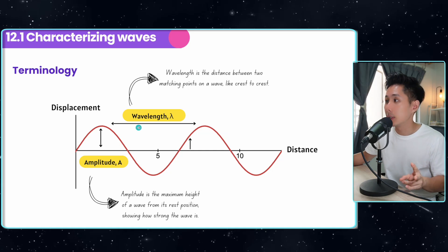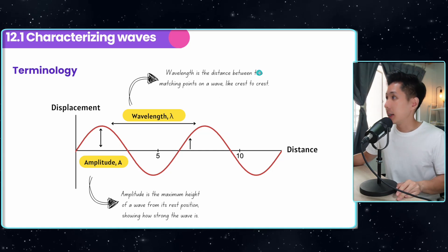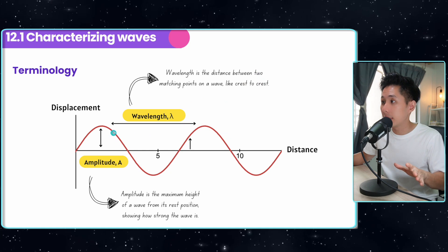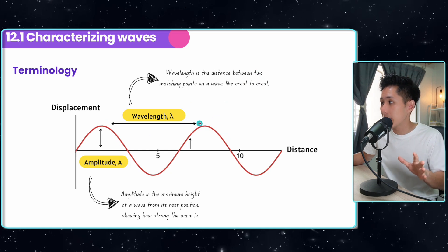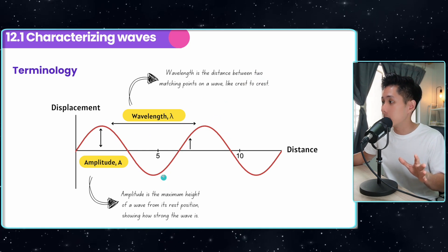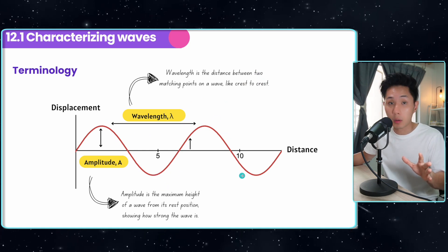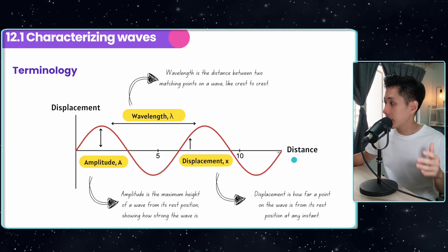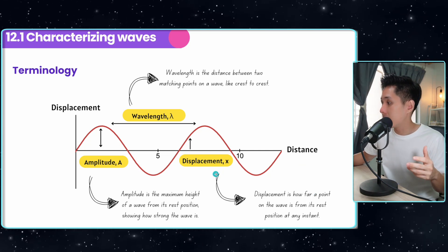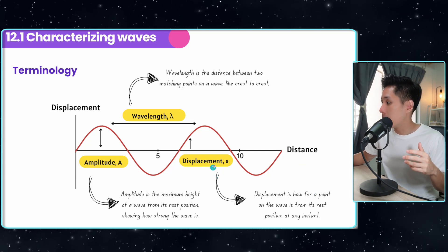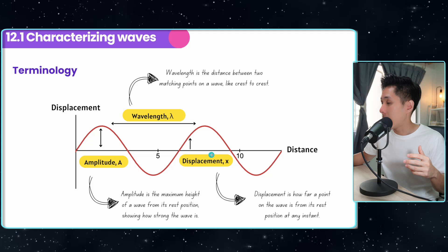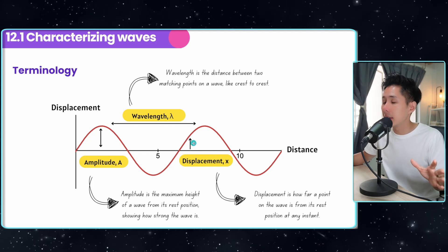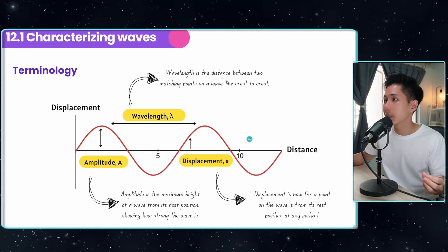The second term is wavelength: the distance between two matching points on a wave, like crest to crest. It can also be trough to trough. Another term is displacement, which is how far a point on the wave is from its rest position at any moment. Unlike amplitude, this is not the maximum distance.